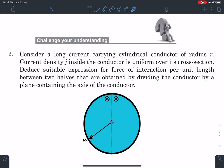Current density j inside the conductor is uniform over its cross section. Deduce suitable expression for force of interaction per unit length between the two halves that are obtained by dividing the conductor by a plane containing the axis of the conductor.